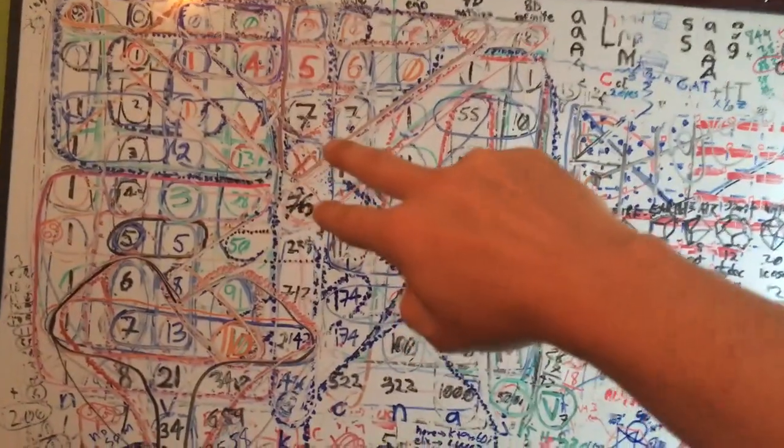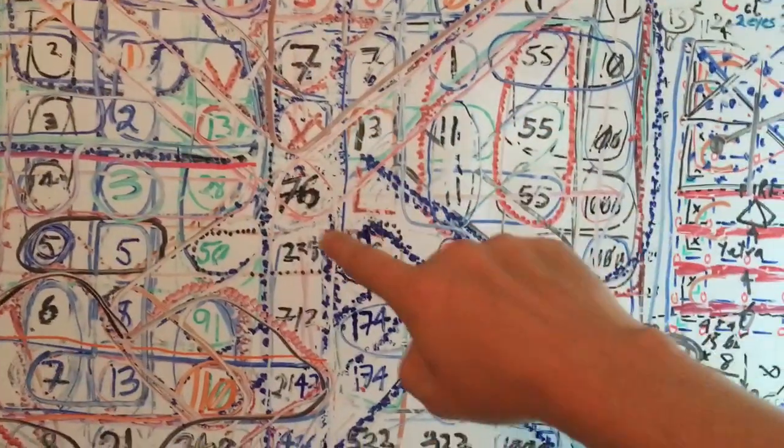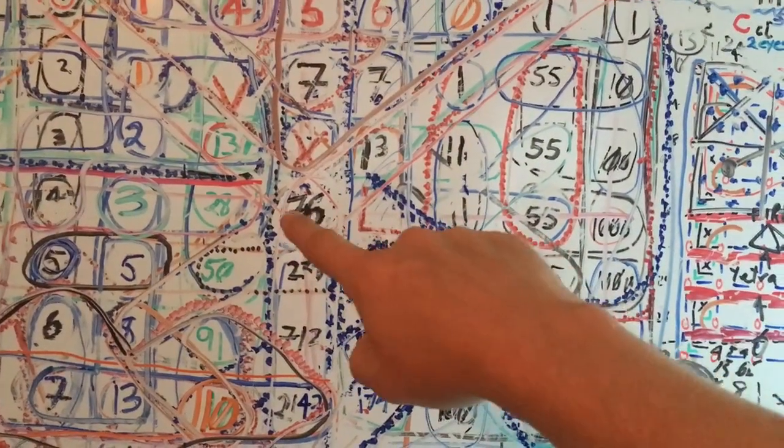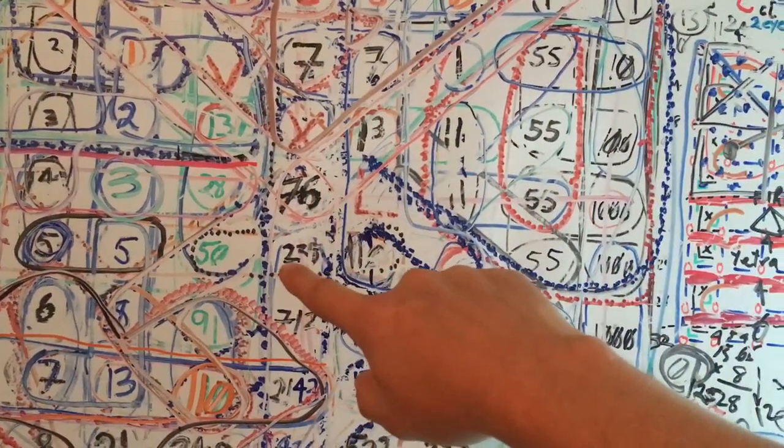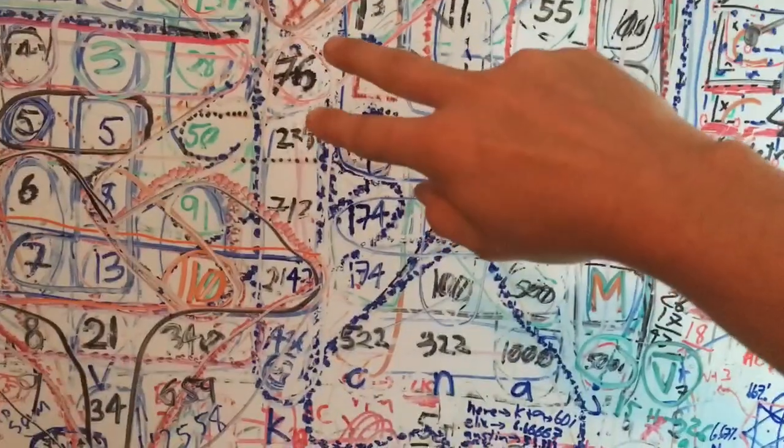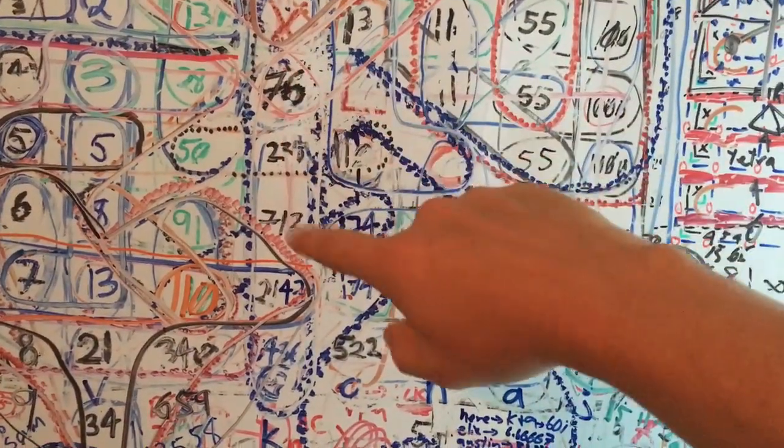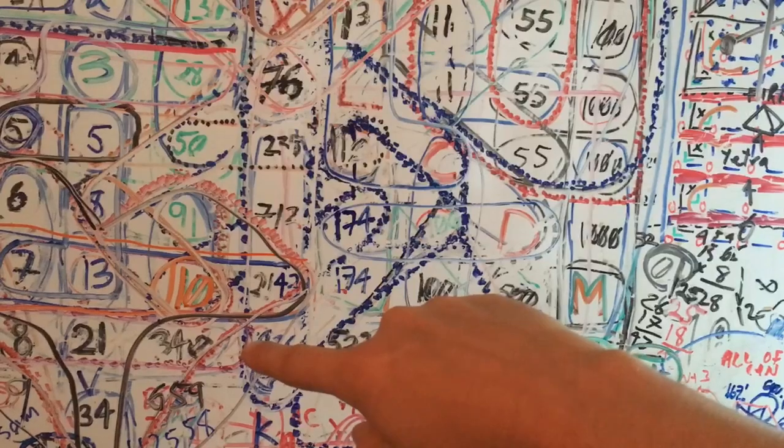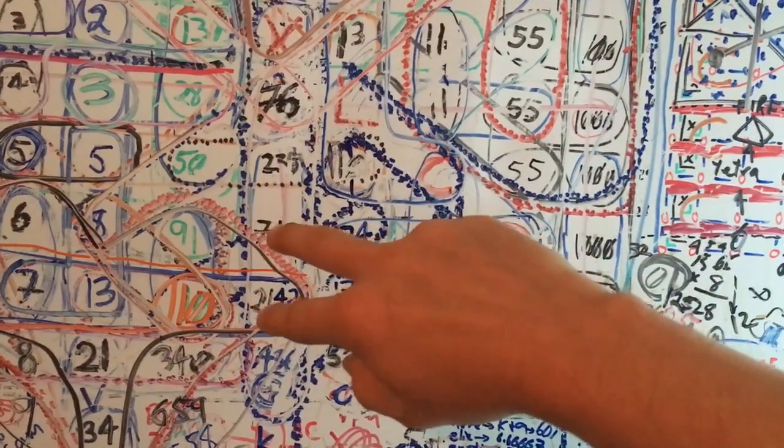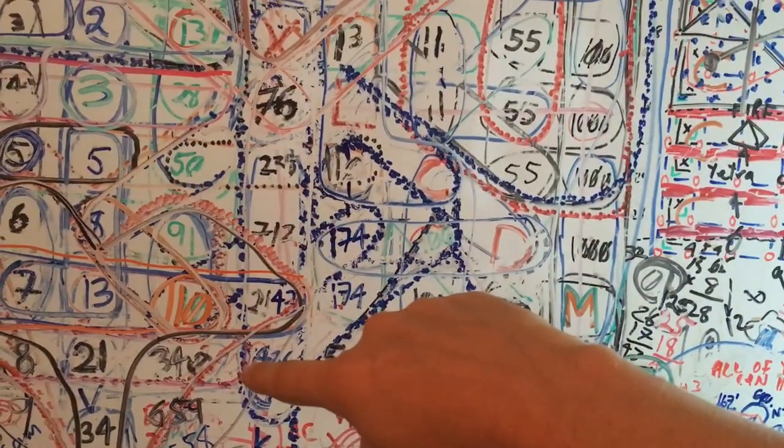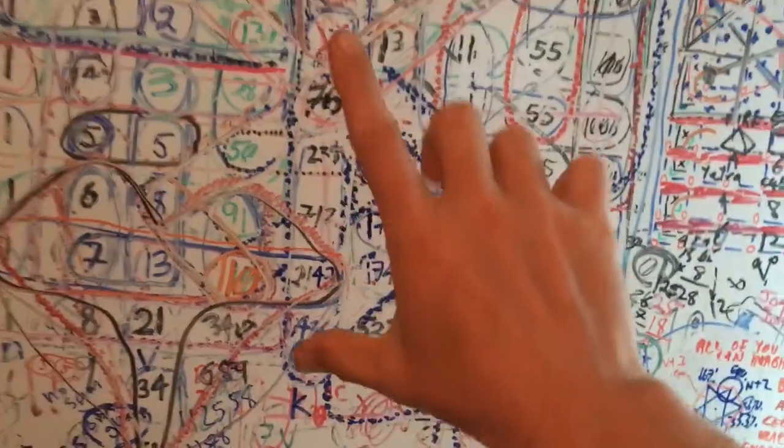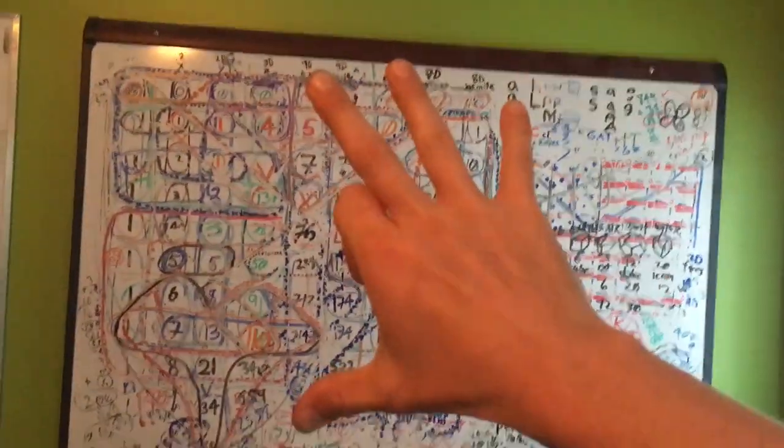Now your O is gonna be the 7 plus the 6 is a 13, 13 plus the leading 2 is 15 for your O. Now your N is gonna be a 7 plus 2 plus 6, which is gonna be, that's your 9, and that's your 6 for a 15, which is a circled 14 for N.